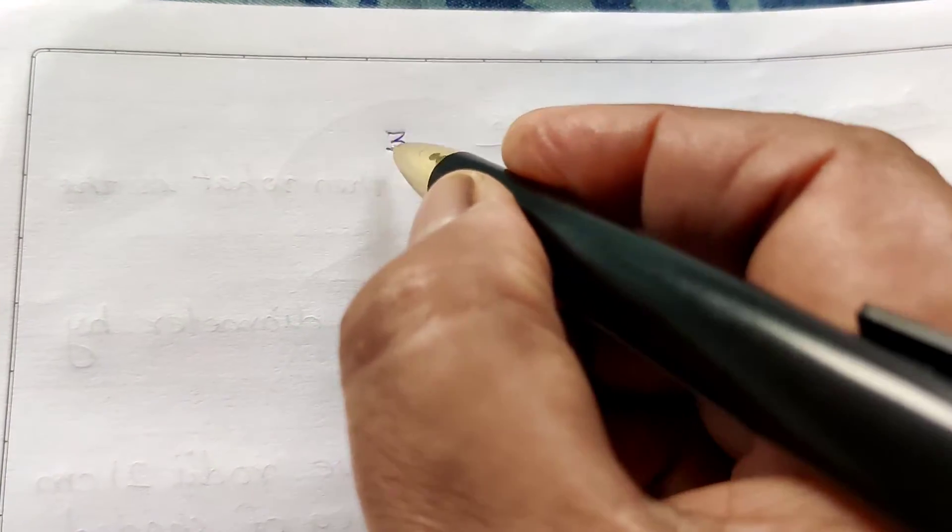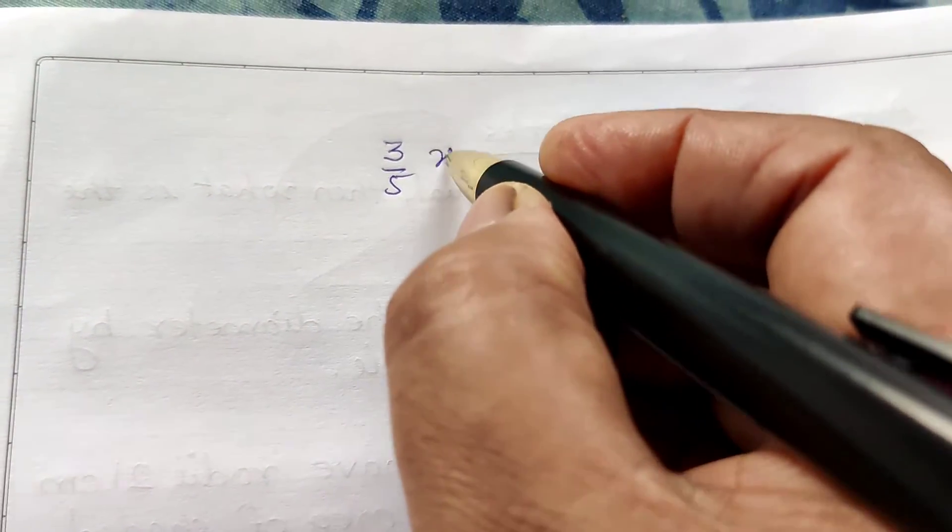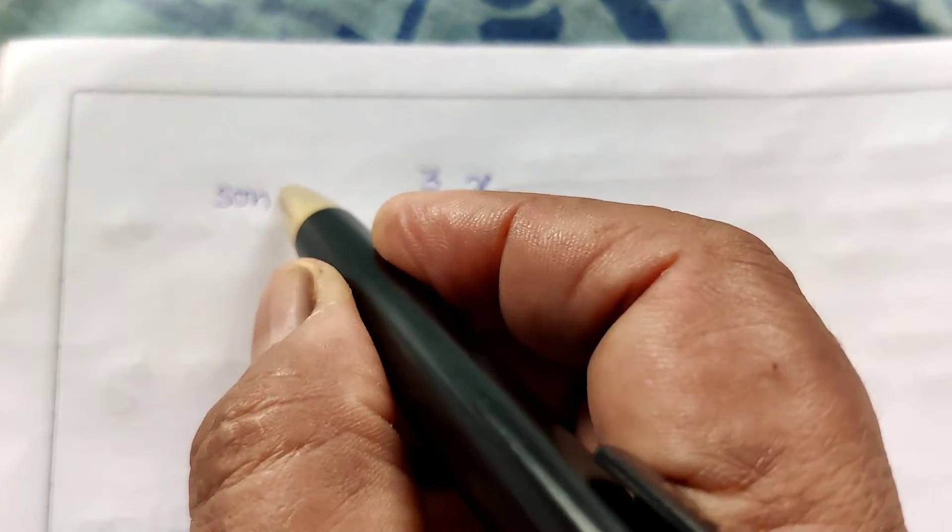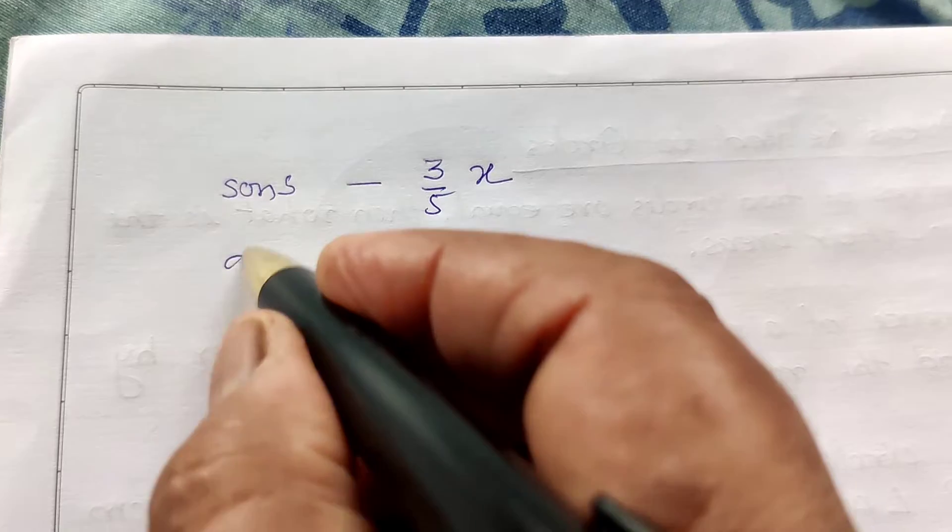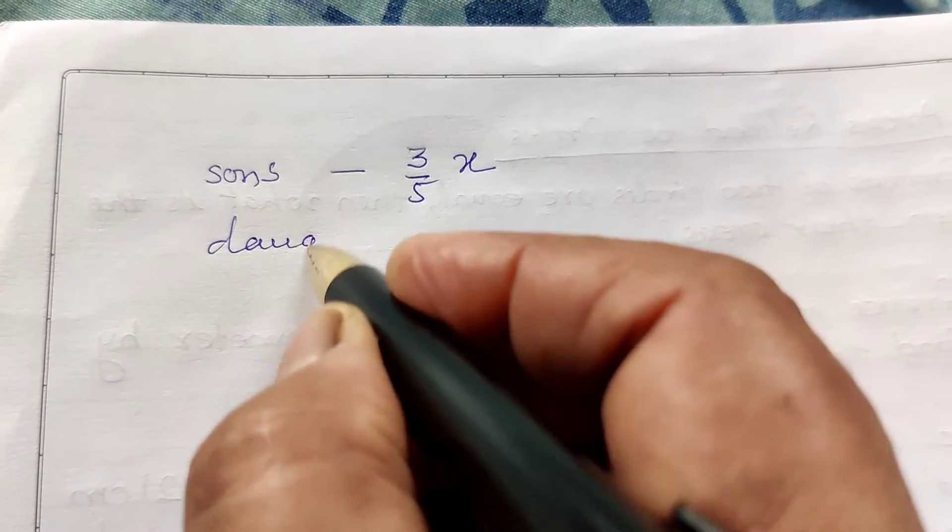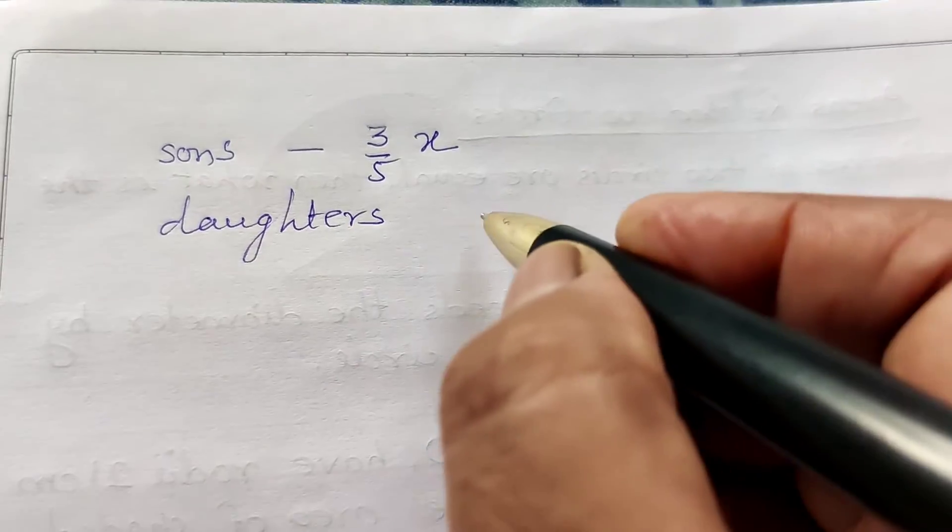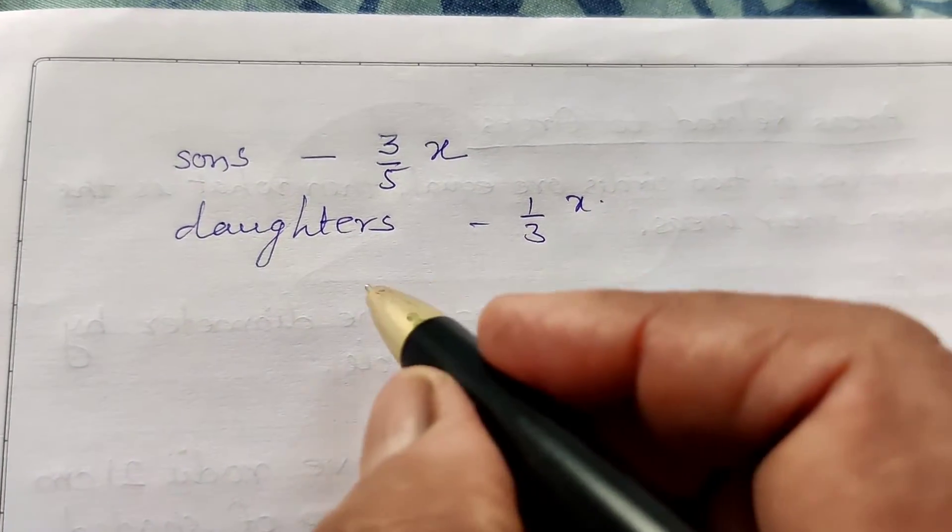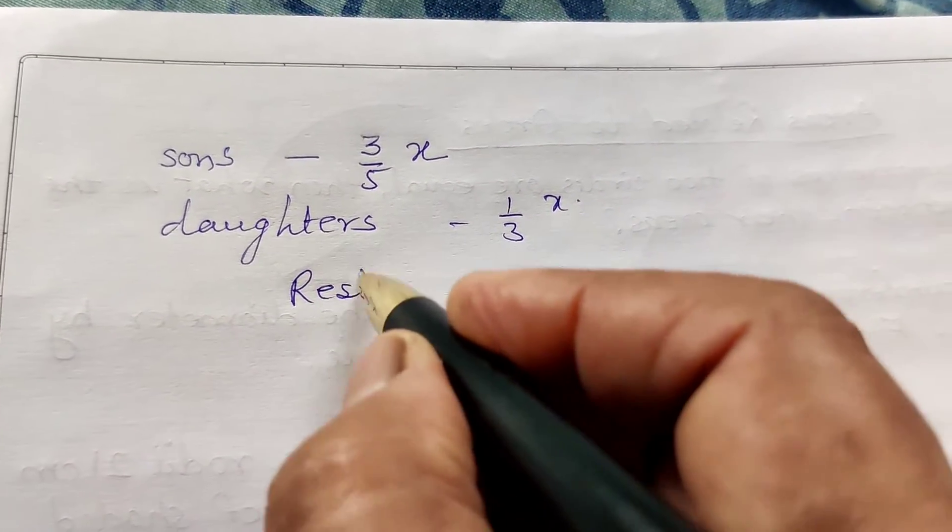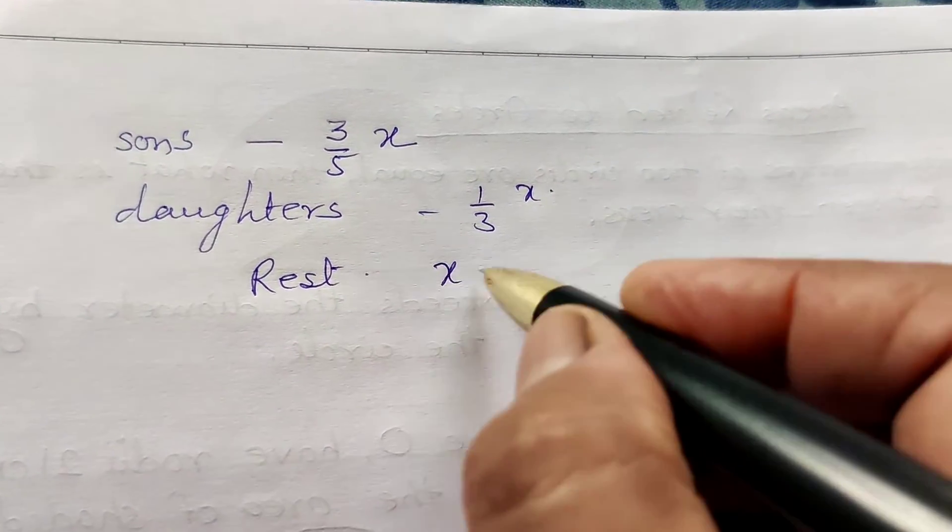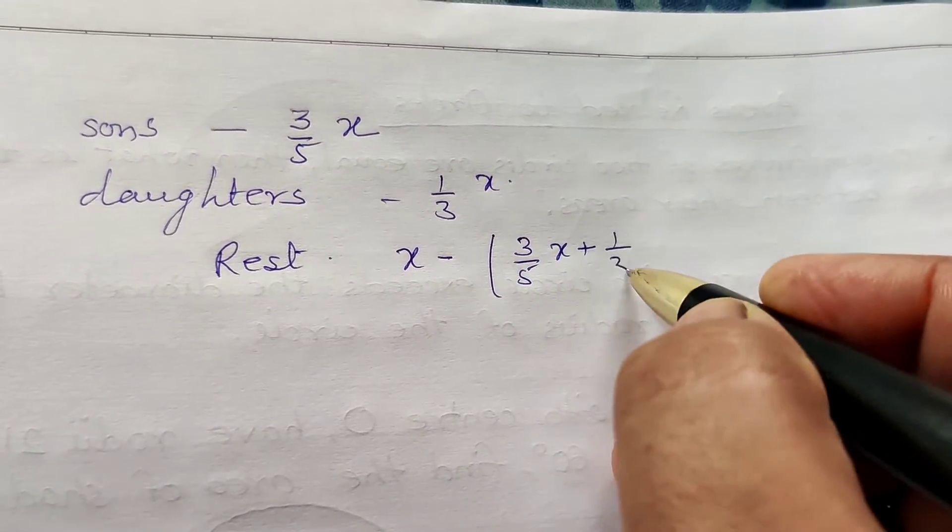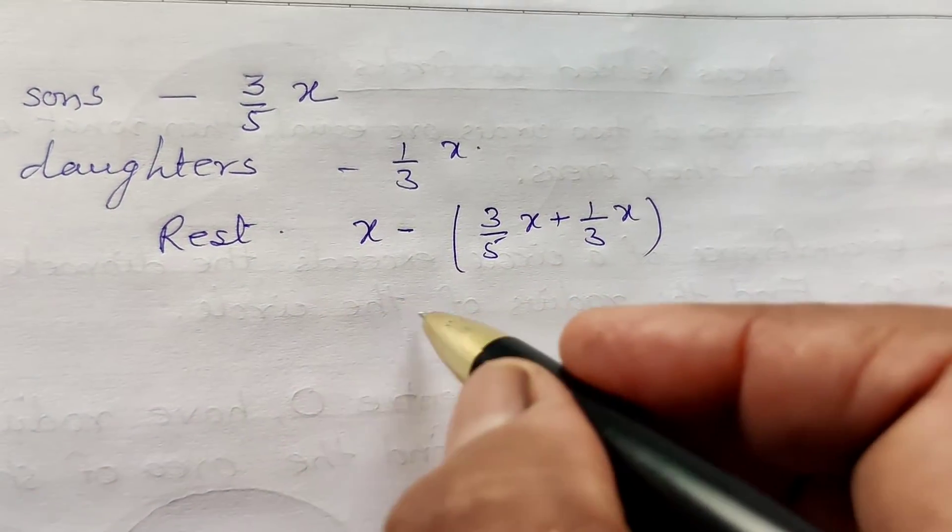The son has given 3/5 of his property to his sons. Let the property equal to X. Then he has given 3/5 of the property. The sons' portion is 3/5X, daughters 1/3X, and the rest money to the charitable trust.